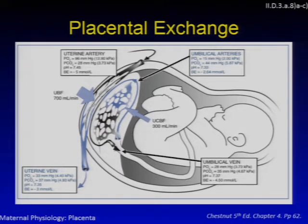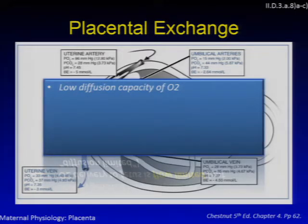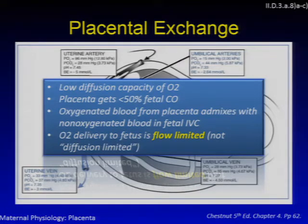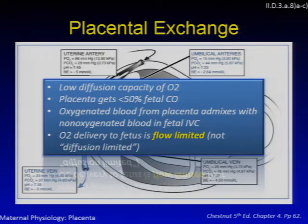With a maternal FiO2 of 1, maternal PaO2 is 435 mmHg, but fetal umbilical venous PaO2 is only 47, indicating low O2 diffusion capacity across the placental intervillous membrane. Furthermore, the placenta receives less than 50% of fetal cardiac output, and blood from the placenta admixes with deoxygenated blood in the fetal IVC, further limiting fetal PaO2. Despite this, O2 delivery to the fetus is flow-limited and not diffusion-limited — maternal blood delivery to the uterus is the predominant factor controlling fetal O2 transfer.